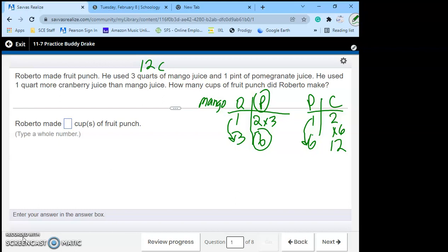One pint of pomegranate. So for pomegranate we have pints to cups. He has one pint which is just two cups. So he has two cups of pomegranate and he used one extra quart of cranberry juice than mango juice. So instead of using three quarts he used four quarts. Well four quarts, one to four is times four which is eight pints. Eight pints going from one to eight is times eight. Eight times two is sixteen cups. So he used sixteen cups of cranberry juice.